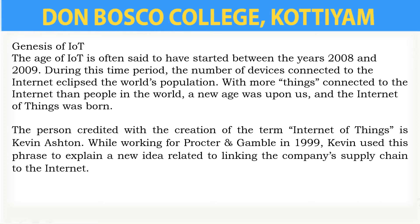The term Internet of Things was first mentioned by Kevin Ashton in a presentation to Procter & Gamble in 1999. Kevin used this phrase to explain a new idea related to linking the company's supply chain to the internet. Kevin Ashton is a co-founder of the MIT Auto ID Lab, and he also developed RFID — that means Radio Frequency Identification — for barcode detection.